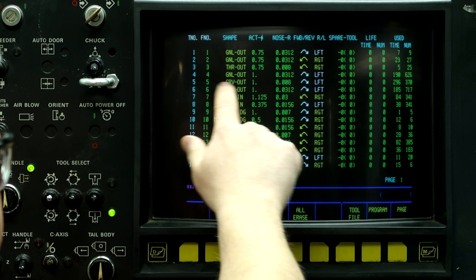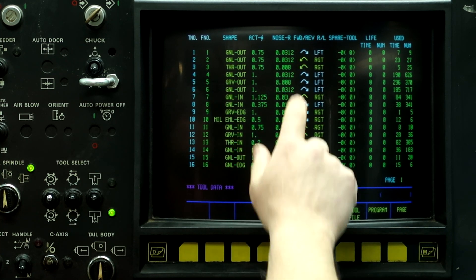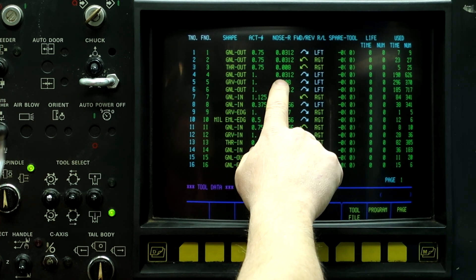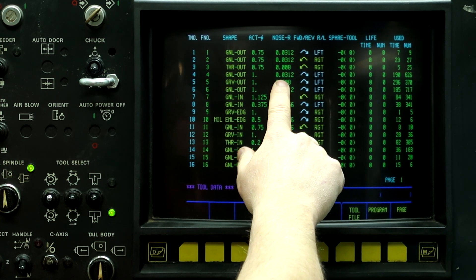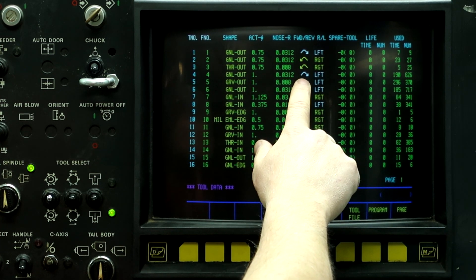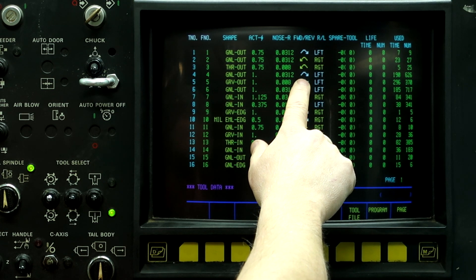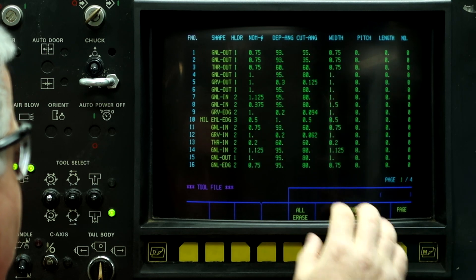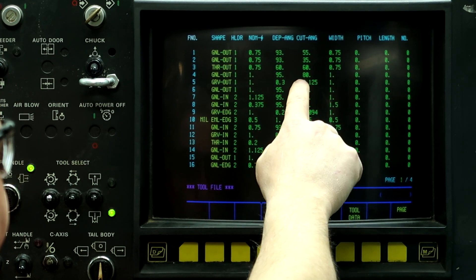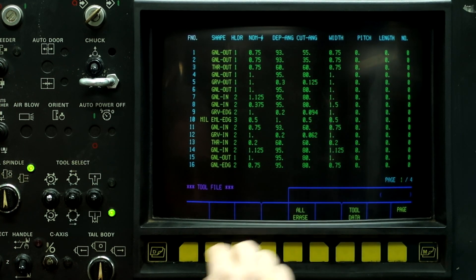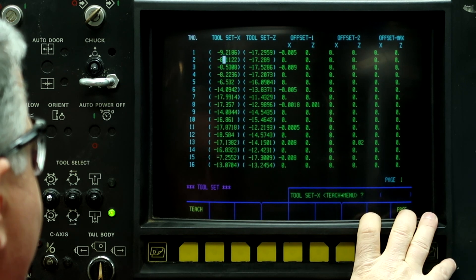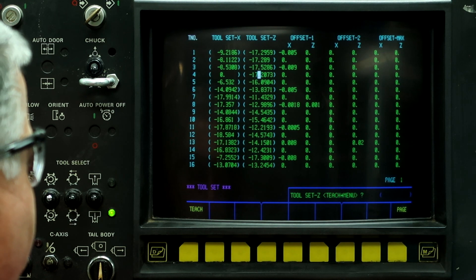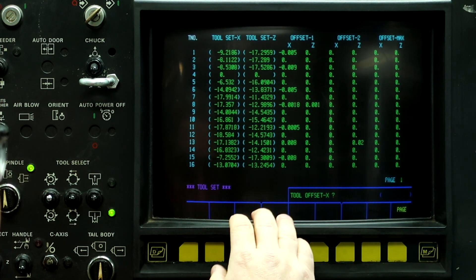So the first thing you need to do is describe the tool. In this case, it's a general OD with a 32 thousandths radius insert and we're going to run in the M04 direction and it's a left-handed tool, 95, 80 degrees. And then I'm going to clear out the geometry of the tool and the wear.